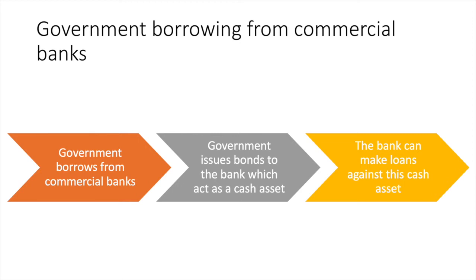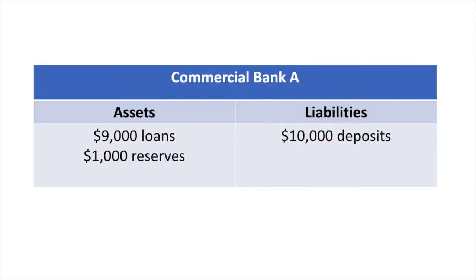Let's look at this another way. When commercial bank A makes a loan of $9,000 to a private business or individual, it still counts as an asset. If the bank is maintaining a liquidity ratio of 10% then it must hold on to the $1,000 in reserves and cannot loan it. However, since they have loaned out $9,000, they are unable to make further loans.